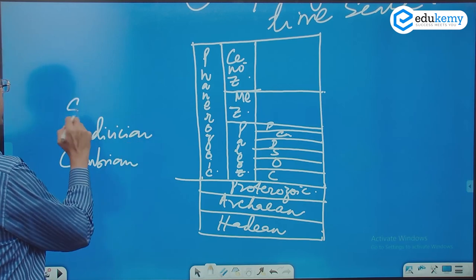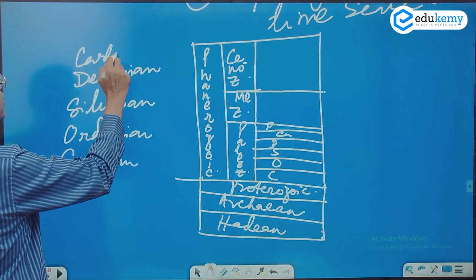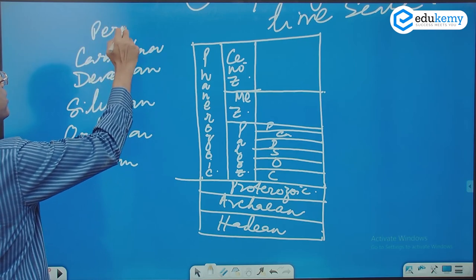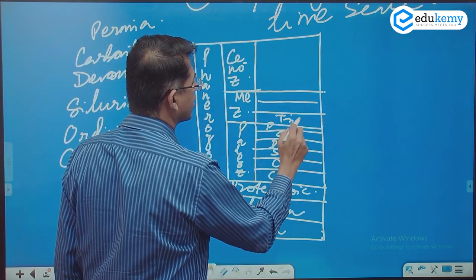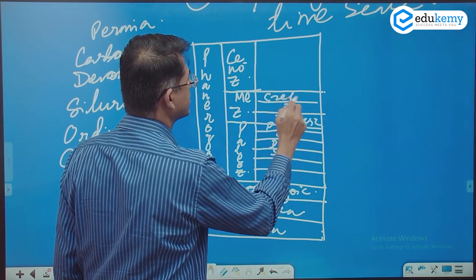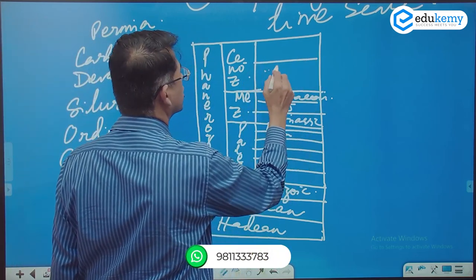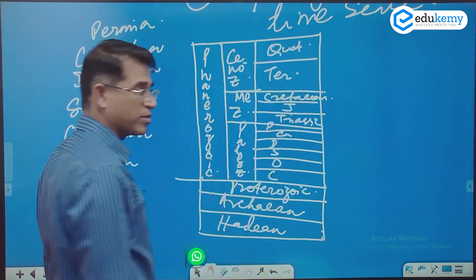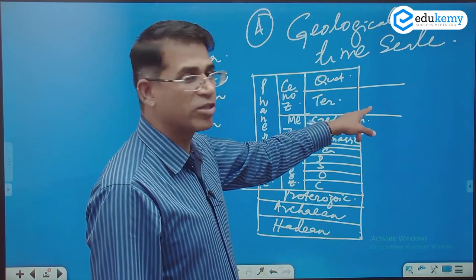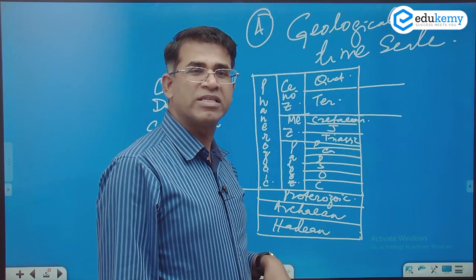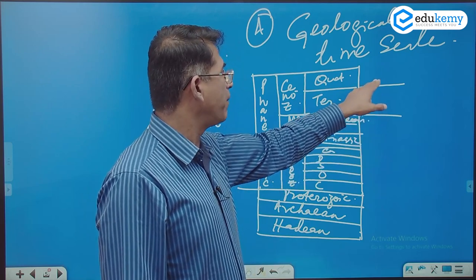In the Mesozoic we have Triassic, Jurassic, and Cretaceous. Then we have Tertiary and Quaternary times, with divisions including Paleocene, Eocene, Oligocene, Miocene, Pliocene, Pleistocene, and Holocene.